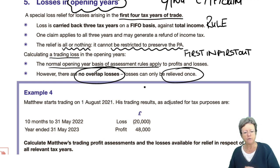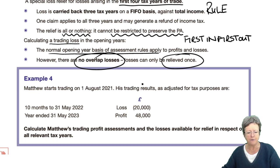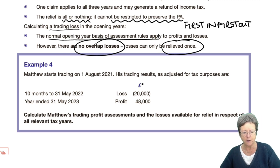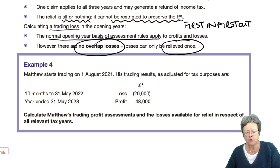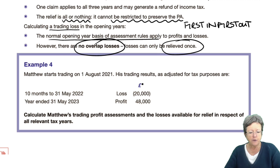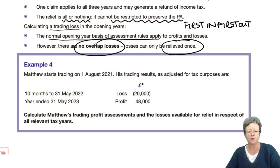So we have Example 4, which is Matthew. Matthew started trading on the 1st of August 2021. His trade results as adjusted for tax purposes — so step one is to adjust and step two is to deduct capital allowances — show that in the 10 months to the 31st of May 2022, he made a loss of £20,000.